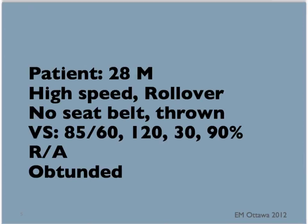The patient now arrives. This is a healthy 28-year-old involved in a high-speed rollover collision. He did not have a seat belt on and was thrown from the car. His vital signs are: blood pressure 80 over 60, heart rate 120, respiratory rate 30, and saturation 90% on room air.